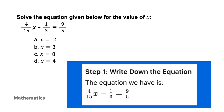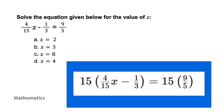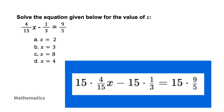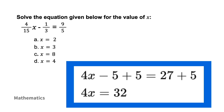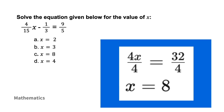On exam day, always make sure to write the problem down first. To make the equation easier to work with, clear the fractions by multiplying every term by the least common multiple of the denominators — in this case, 15, 3, and 5, where the LCM is 15. Expand both sides, then simplify to get 4x minus 5 equals 27. Add 5 to both sides, then divide both sides by 4 to solve for x. That gives us x equals 8.